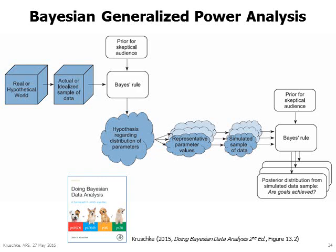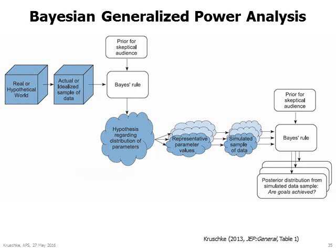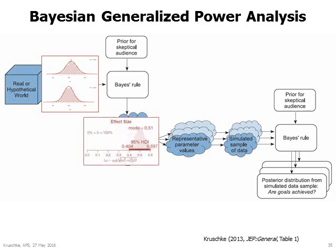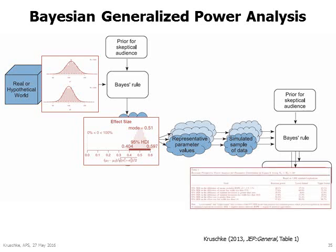Complete details and software are provided in the book Doing Bayesian Data Analysis. Another complete example, specifically for comparing two groups, is provided in an article in JEP General. In this example, idealized data are generated for the expected effect — idealized data are far easier to elicit and intuit than distributions over complex parameter spaces. Then a posterior distribution over a five-dimensional parameter space is computed, capturing uncertainty in the parameter values. Then the prospective probabilities of achieving various goals are computed. If power is not sufficiently high, the prospective simulations are repeated with a higher sample size.